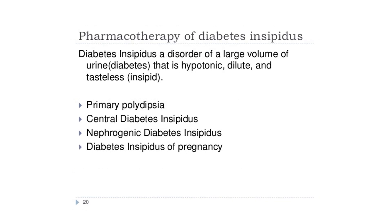Diabetes insipidus is a rare disorder where large volumes of hypotonic, dilute, tasteless urine are produced. Patients can have primary polydipsia, central diabetes insipidus, nephrogenic diabetes insipidus, or diabetes insipidus of pregnancy. Let us see the pharmacotherapy of each type.